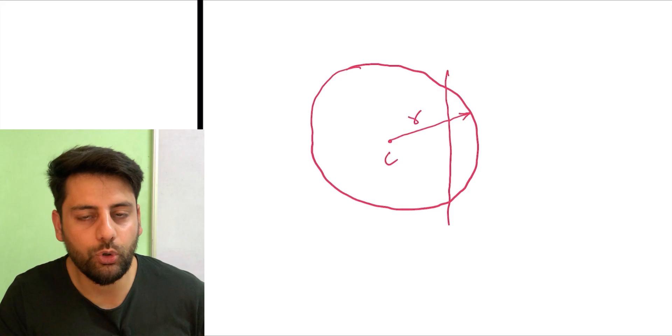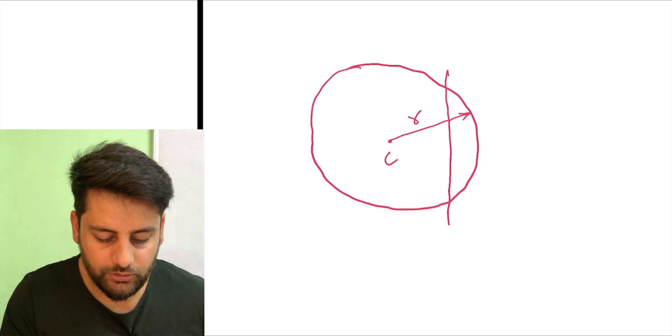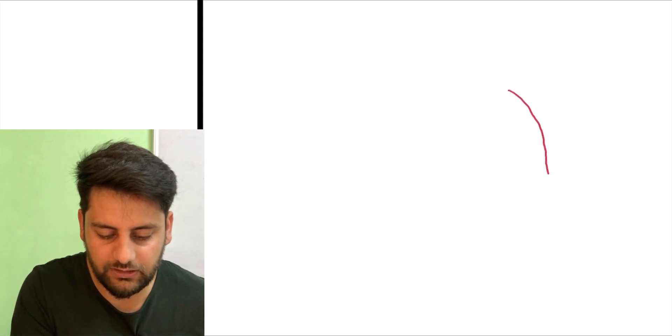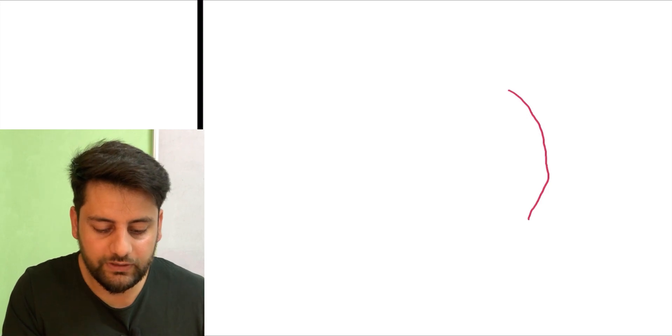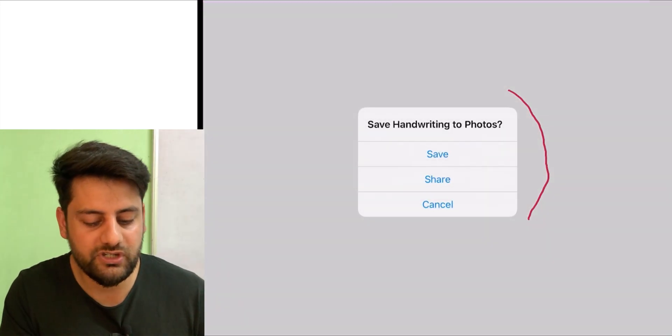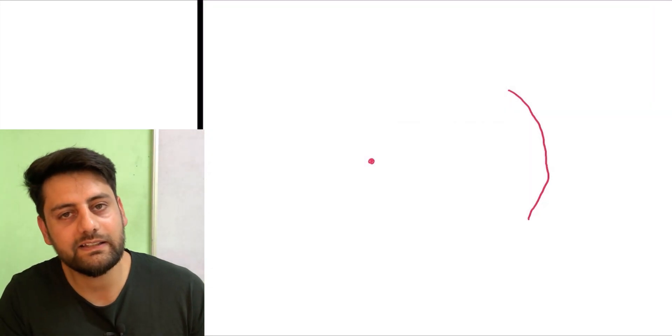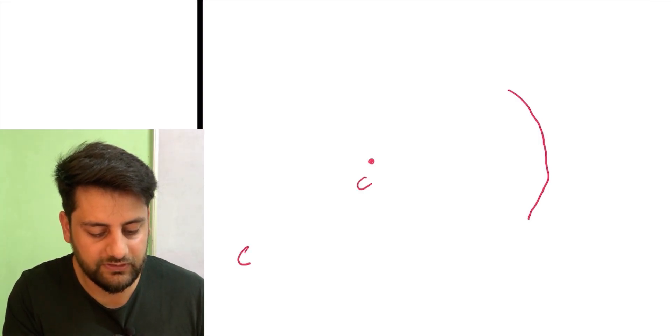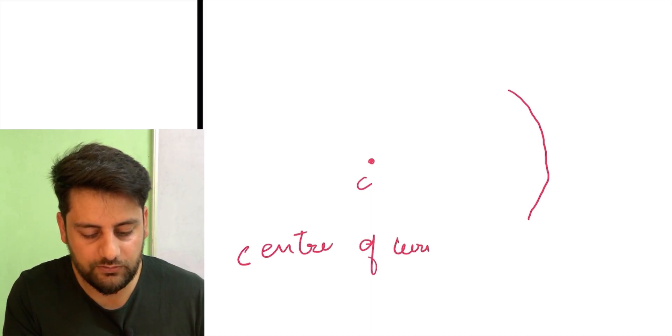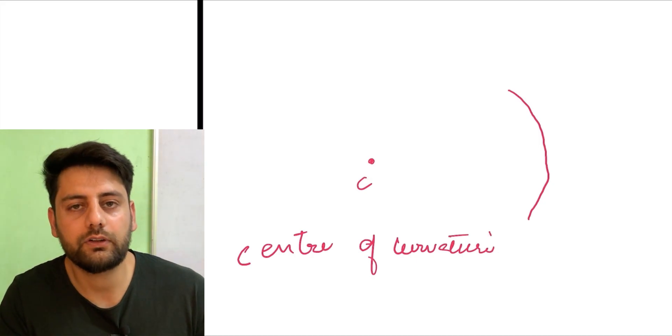And this whole sphere is made up of glass, for example. Agar main ye alag se sphere lehe rao hon yaha pe, ek chota sa curvature lehe rao hon, joh is sphere se cut ki hai. Obviously this curvature has been cut from the main sphere. So is curvature ke hisaab se, its center is still same. That is basically now called as center of curvature. This is our first term. This is known as center of curvature.